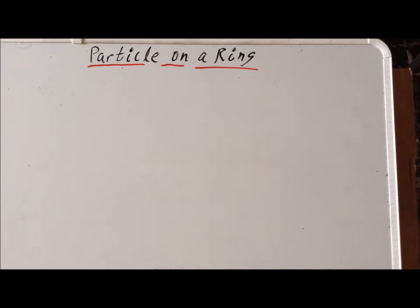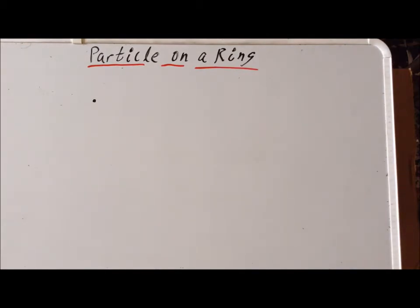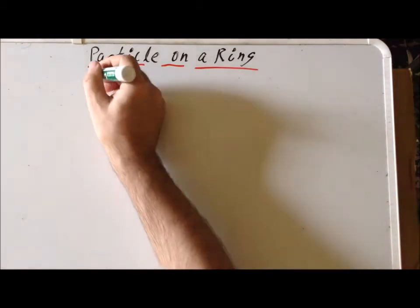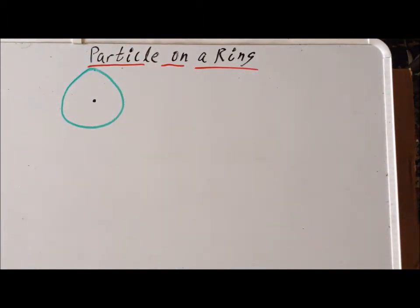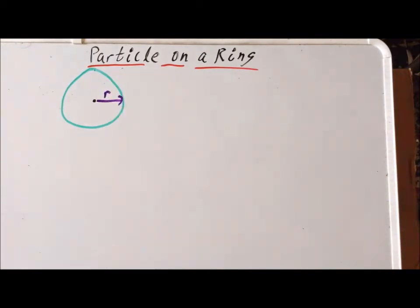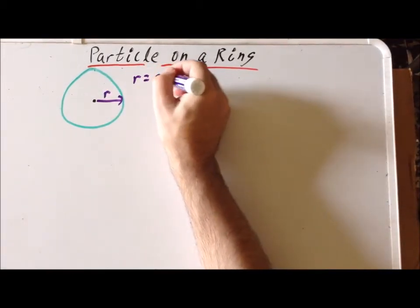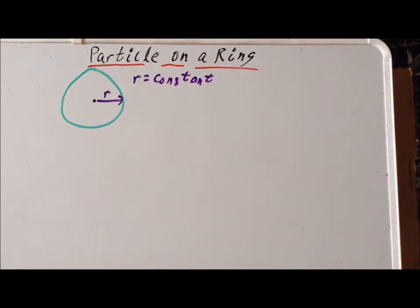Hello. In this video, we are going to deal with rotation in quantum mechanics, the particle on a ring problem. Imagine that we have a central point and then we have a particle rotating in a perfect circle around this point. The distance that the particle is from the center we are going to call r, and we are assuming that r is going to be constant. Other than the particle being constrained to rotate in a perfect circle, there will be no potential energy acting upon the particle.